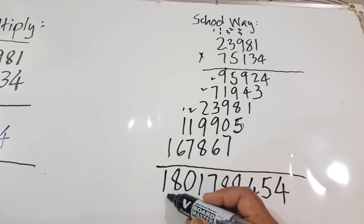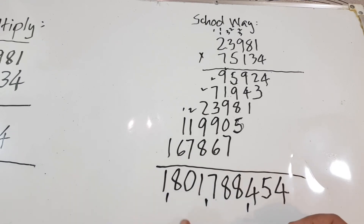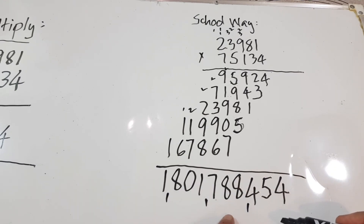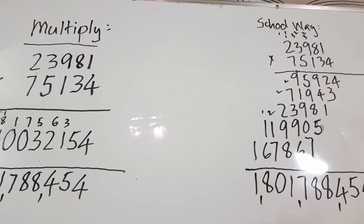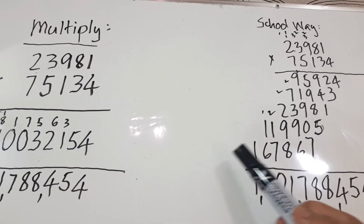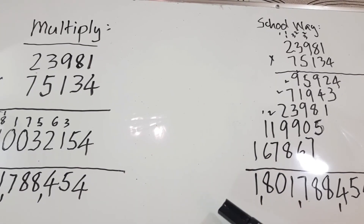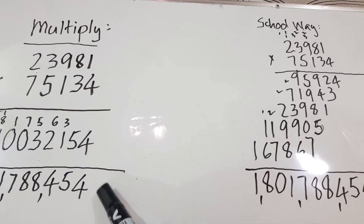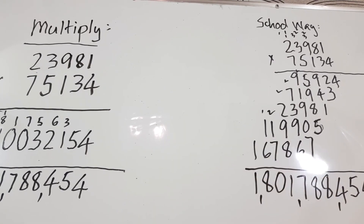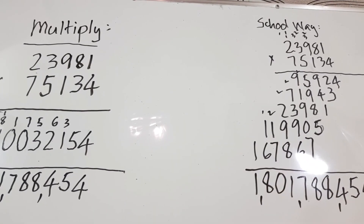The answer is one billion, eight hundred one million, seven hundred eighty-eight thousand, four hundred fifty-four. You can comment down below which one you think is easier — this school way or this quicker method. Thank you guys for watching.